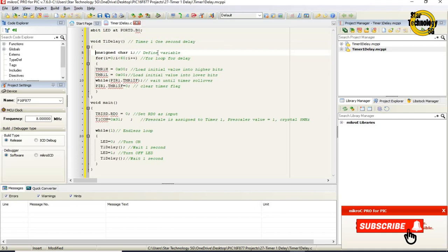unsigned char i. For i equals 0, i less than 30, increment i. For loop for delay. TMR1H equals 0x00. Load initial value into higher bits of Timer 1. TMR1L equals 0x00. Load initial value into lower bits of Timer 1. While PIR1.TMR1IF. Wait until timer rollover. PIR1.TMR1IF equals zero. Clear timer flag.